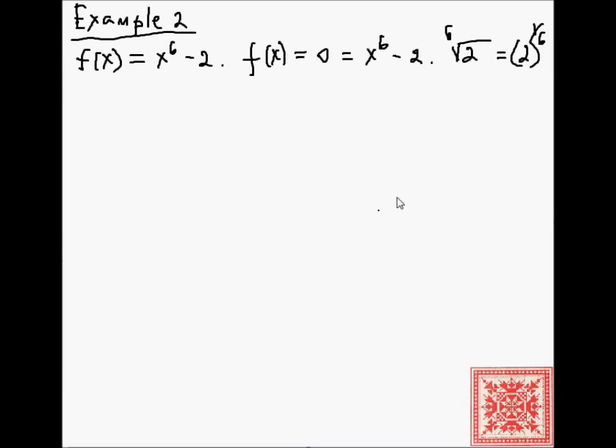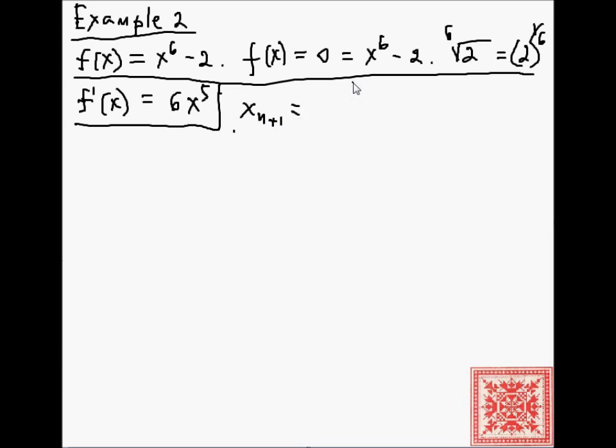If you think about it, that's the value that we need to figure out. Because x to the sixth minus 2 is equal to 0 when x is equal to 2 to the 1 over 6. So, the derivative of this is 6 times x to the fifth. So, according to the formula, the n plus first guess can be obtained recursively from the nth guess. According to this formula, x to the n to the sixth minus 2, 6 times x to the n to the fifth.